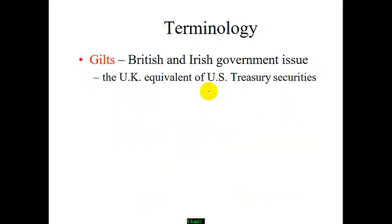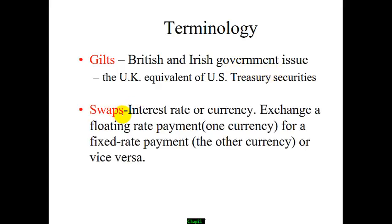GILTS is the UK version of US Treasuries, issued by the British and Irish governments. Swaps are one type of widely used derivative — typically two parties exchange one floating rate payment for a fixed rate payment, which could be interest rate or currency. As you can see, if you're considering foreign investment to raise money, there are many different ways to do so, such as ADRs, euro bonds, and so on.